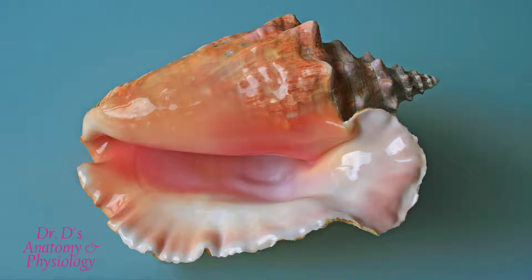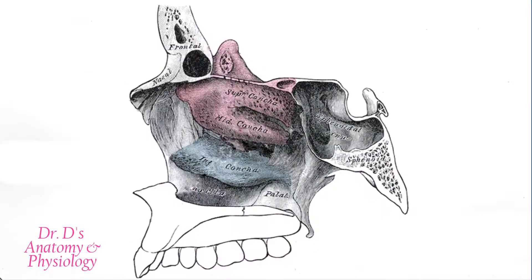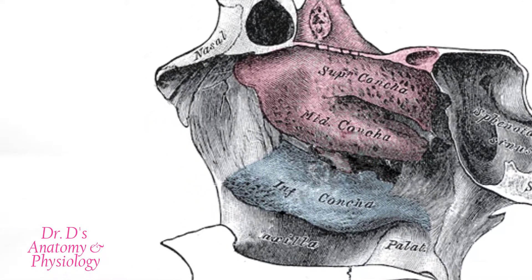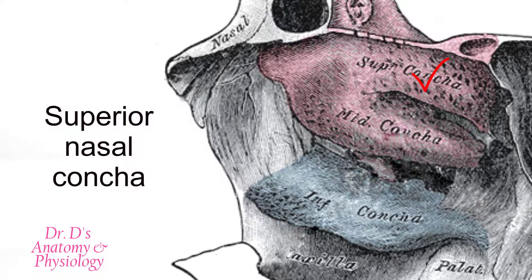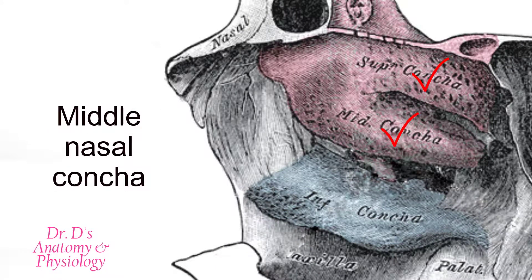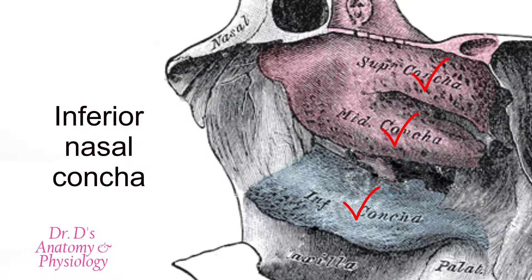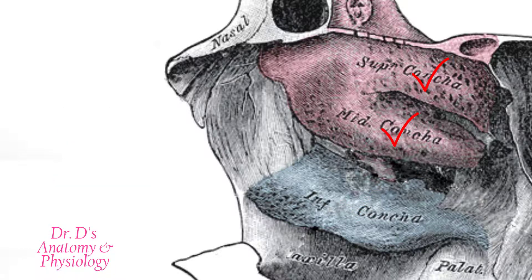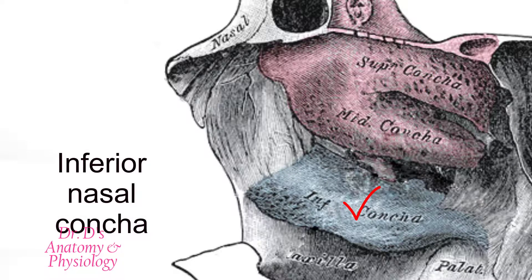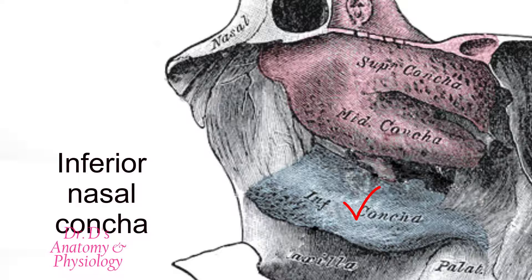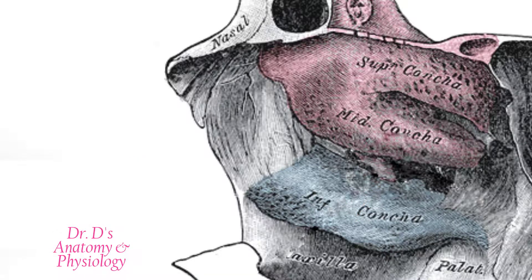Now let's look at this sagittal view to see all three nasal conchae. We can now see the superior nasal concha, the middle nasal concha, and the inferior nasal concha. The superior and middle nasal conchae are part of the ethmoid bone, and the inferior nasal concha is an independent bone — it's one of the 14 facial bones and it is paired.